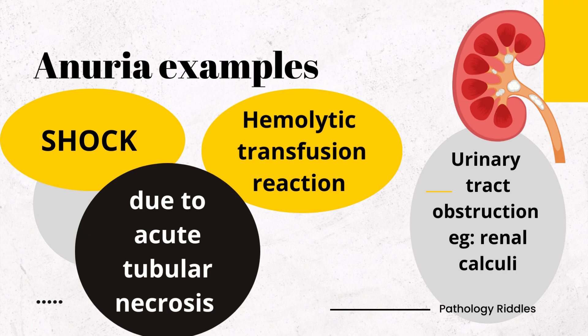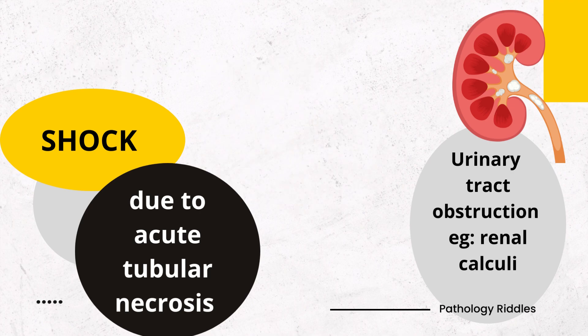What are the examples of anuria? Anuria can be seen in shock due to acute tubular necrosis, hemolytic transfusion reaction, and urinary tract obstruction — for example, renal calculi.